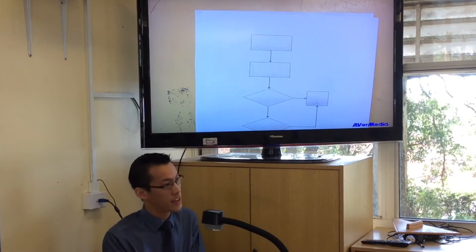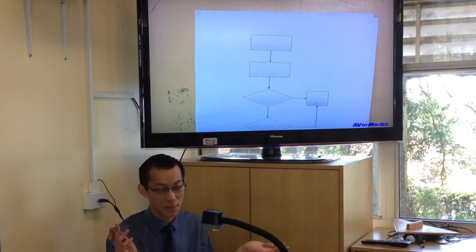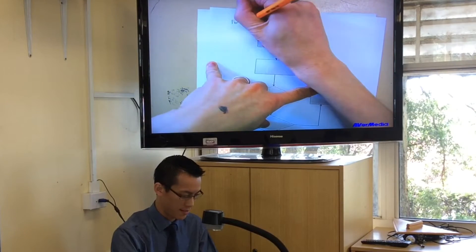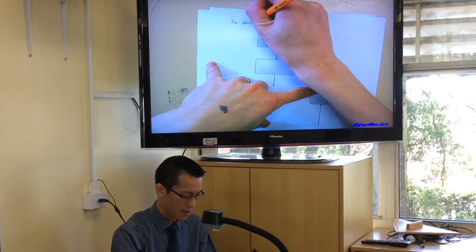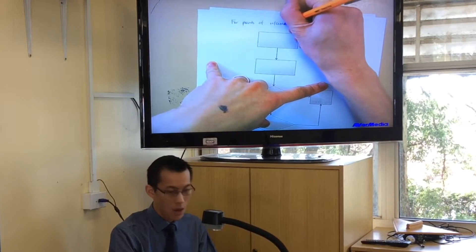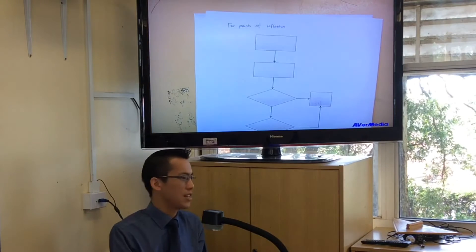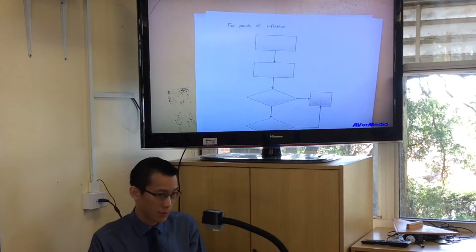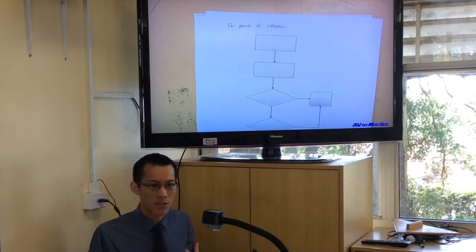The heading on this page is stationary points and points of inflection. We just did stationary points, so this is for points of inflection. That previous flowchart I just showed you, I envision you getting a question that says locate the stationary points and determine their nature. That's the series of steps you'll go through, and I hope you can see the logic as to why.